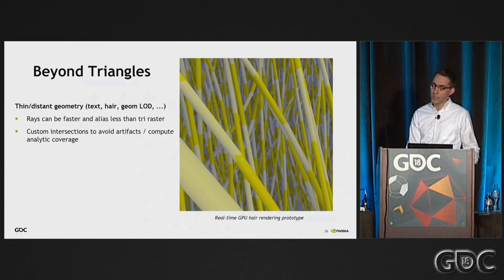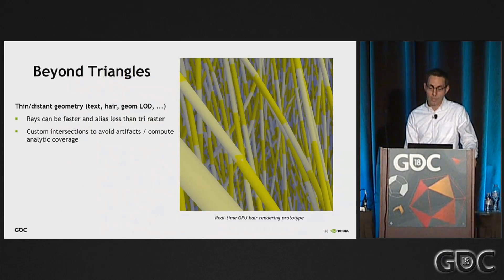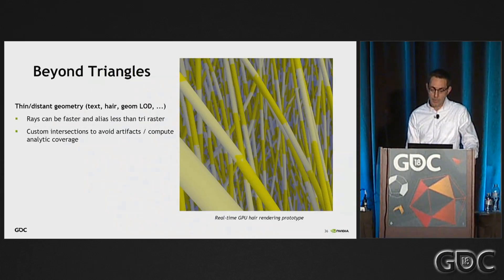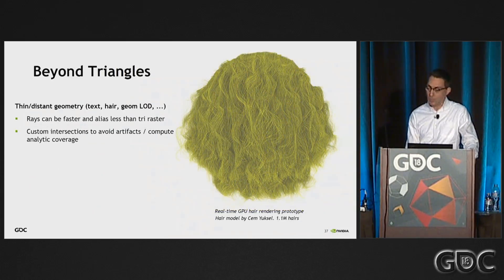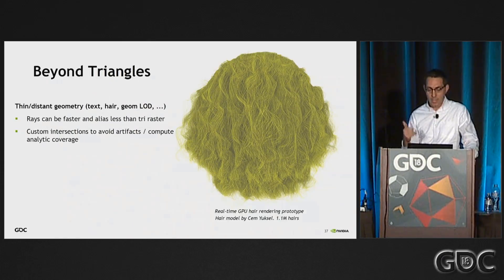Here's an example of real-time hair rendering. We have internal work that has managed to solve this intersection test very efficiently, so that you can intersect not only 100 or 1,000 hairs per frame but actually do it on a full hair model. This is from a very hairy person with over 1 million hairs, rendering real-time by intersecting the actual geometry through custom intersection shaders.